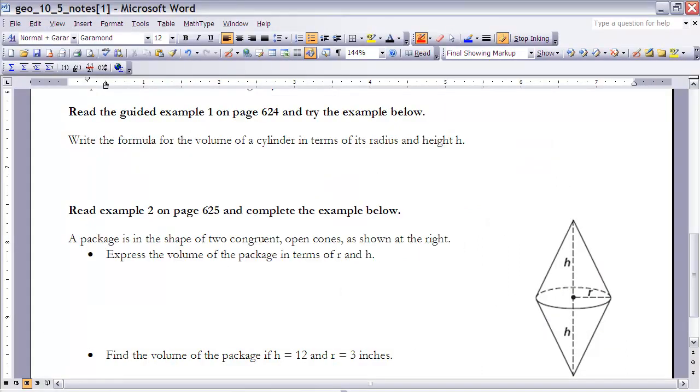So this next example here is very similar to the guided example 1 on page 624, so you might want to read that before continuing on with this next example. It says write a formula for the volume of a cylinder in terms of radius and height.